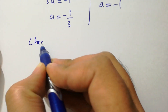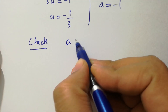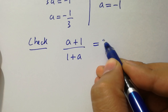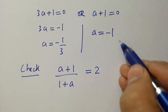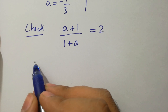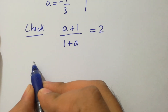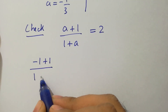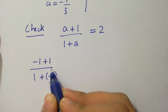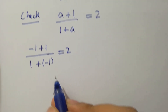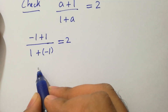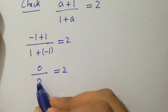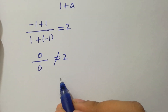Now let's check: the equation is (a+1)/(1+a) = 2. Putting a = -1: (-1+1)/(1+(-1)) = 0/0, which does not equal 2. So a = -1 is not a valid solution.